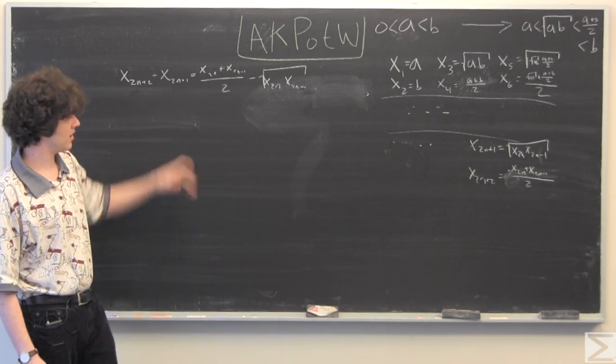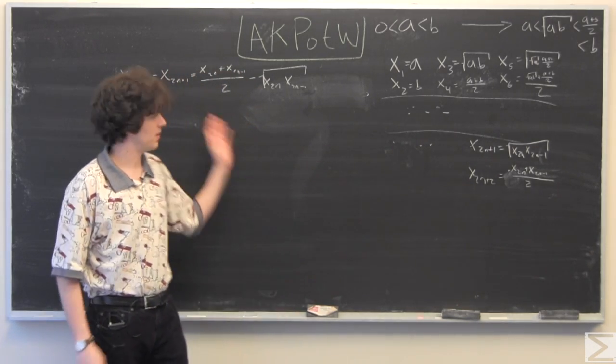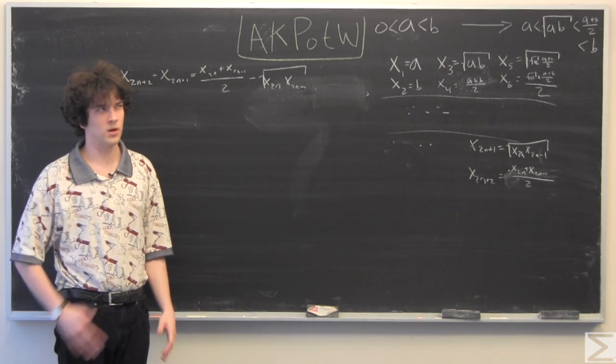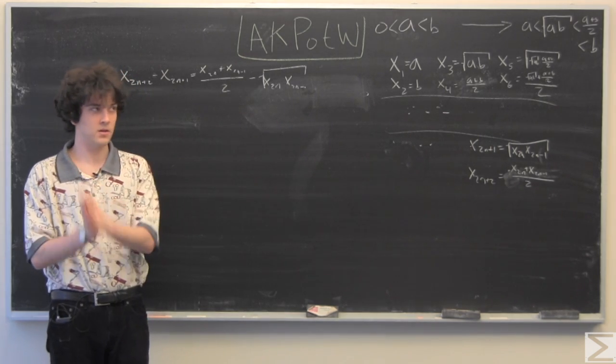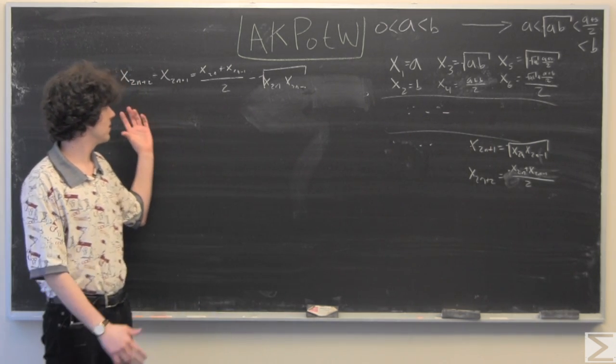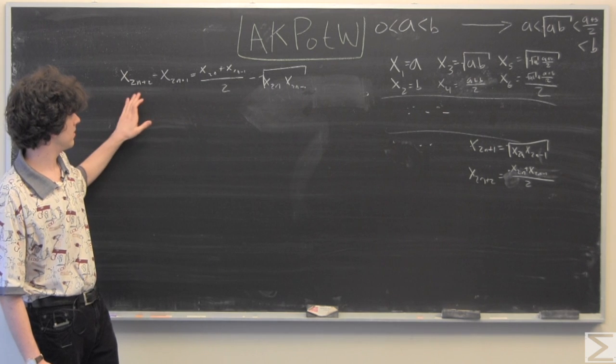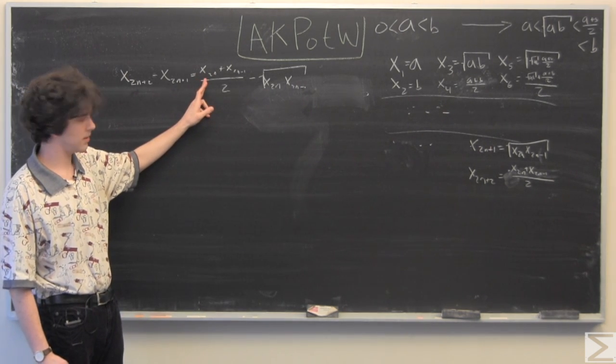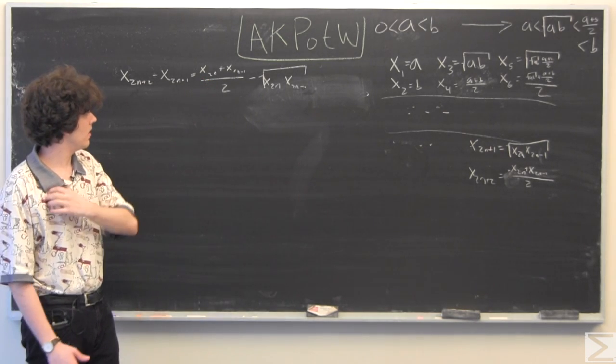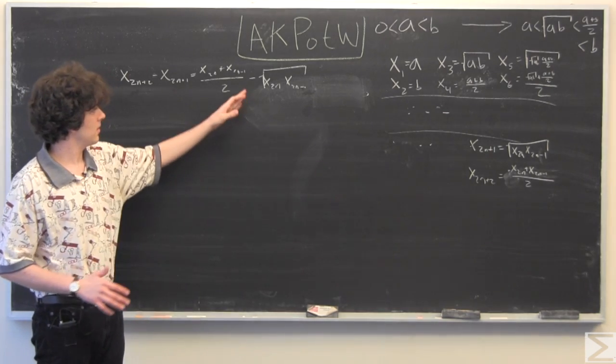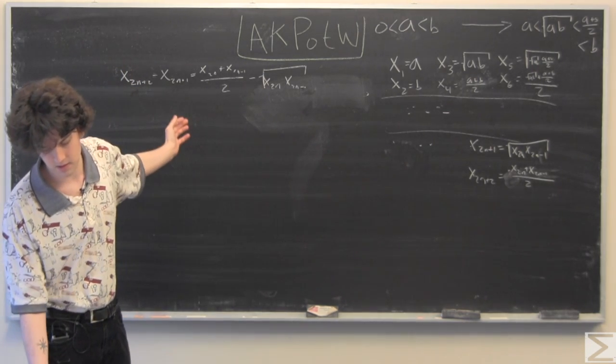So we have this even and this odd, and the even terms, x sub 2n plus 2, this is given to you, but it will help to think about this in a more concrete way. This even and odd couplet is equal to the arithmetic mean of the two numbers before that couplet minus the geometric mean of the two numbers before that couplet. I'm just going to simplify this down a little bit.